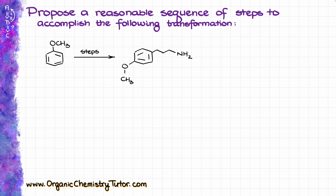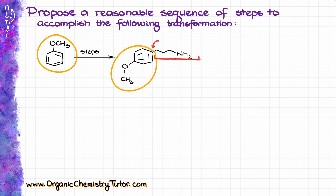When it comes to our synthesis, the first thing that we are always going to do is the retrosynthetic analysis. And what I'm seeing right away is that part of our original molecule we can see right over here in our product, which means that the only important bond that we are going to be making here is right over there. That's going to be our new carbon-carbon bond, so we'll need to figure out how to add this whole part to our molecule.